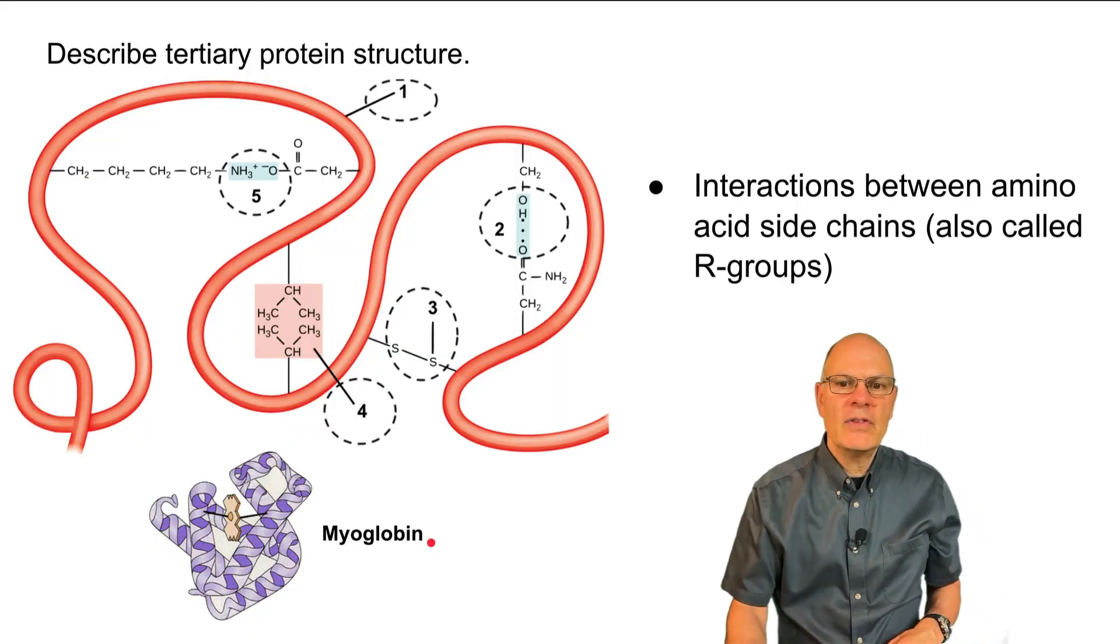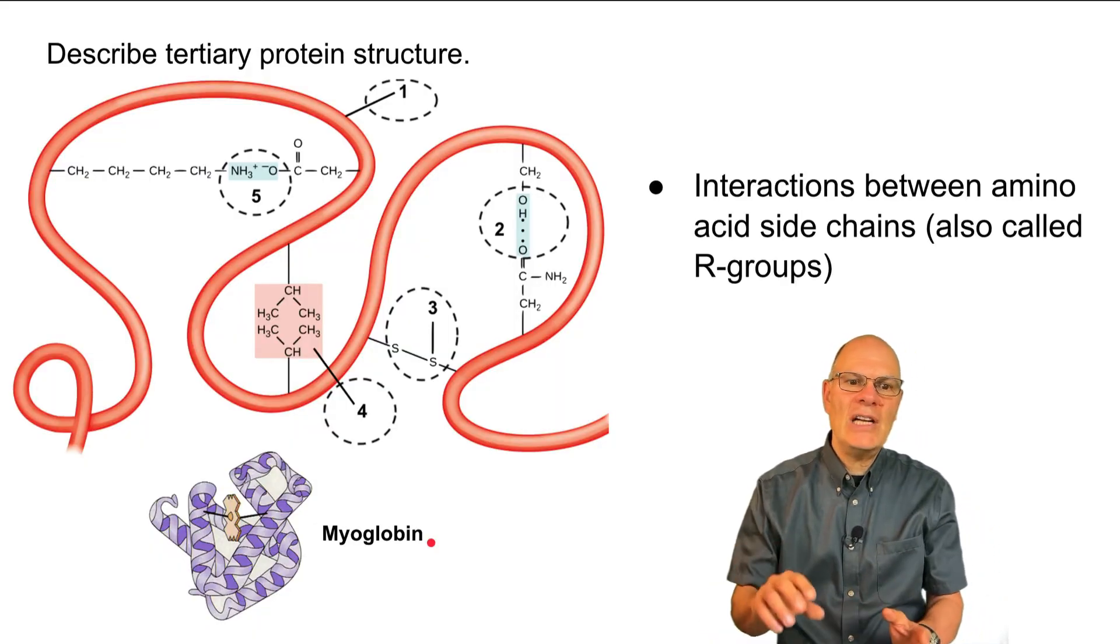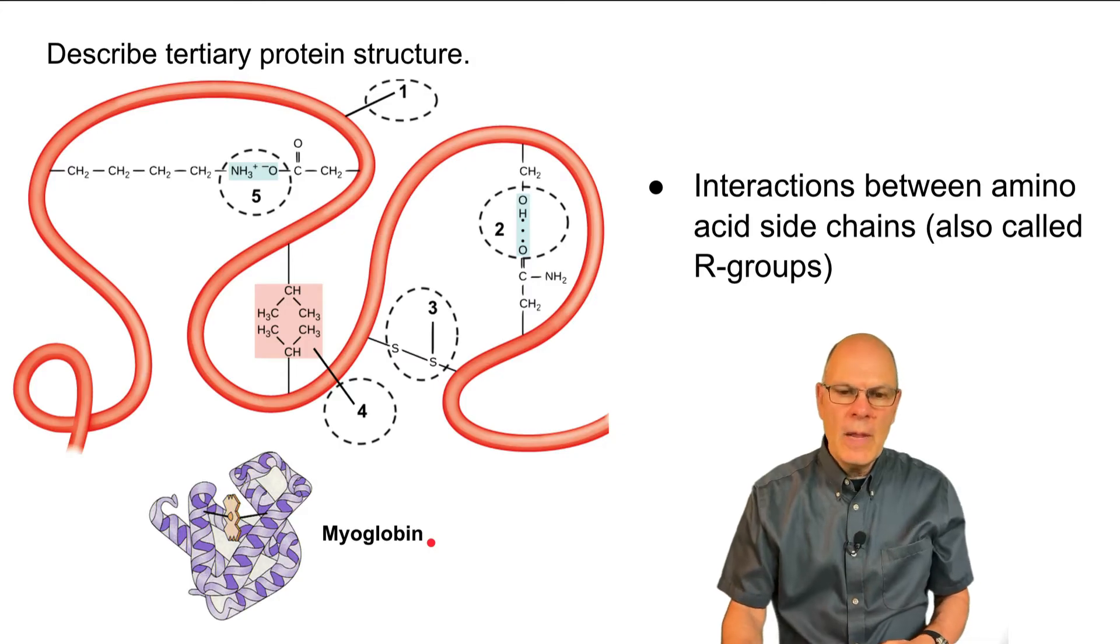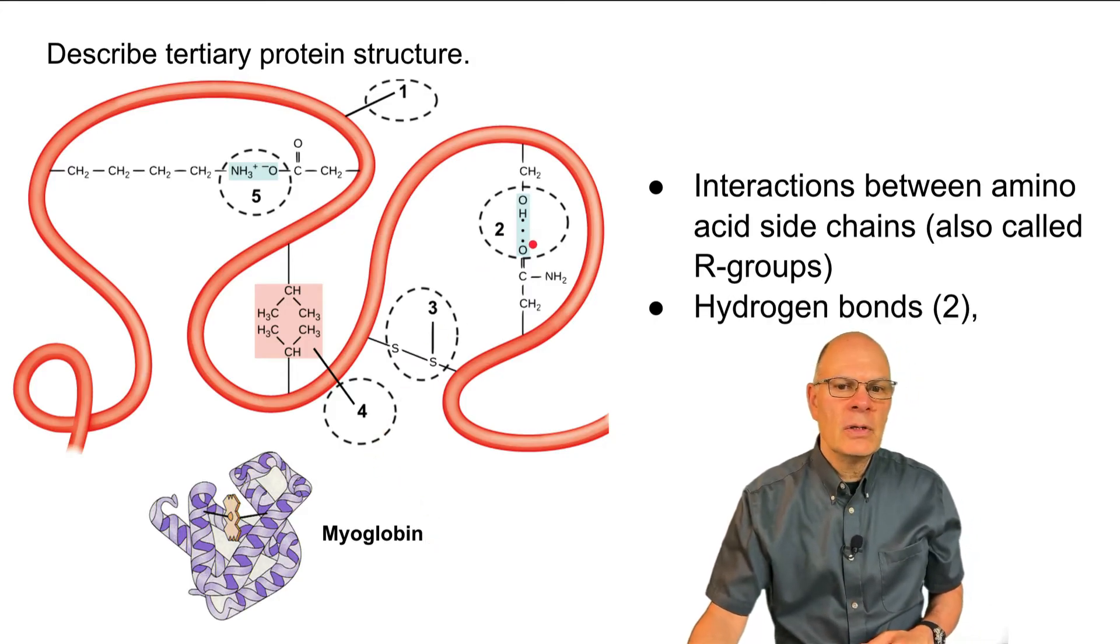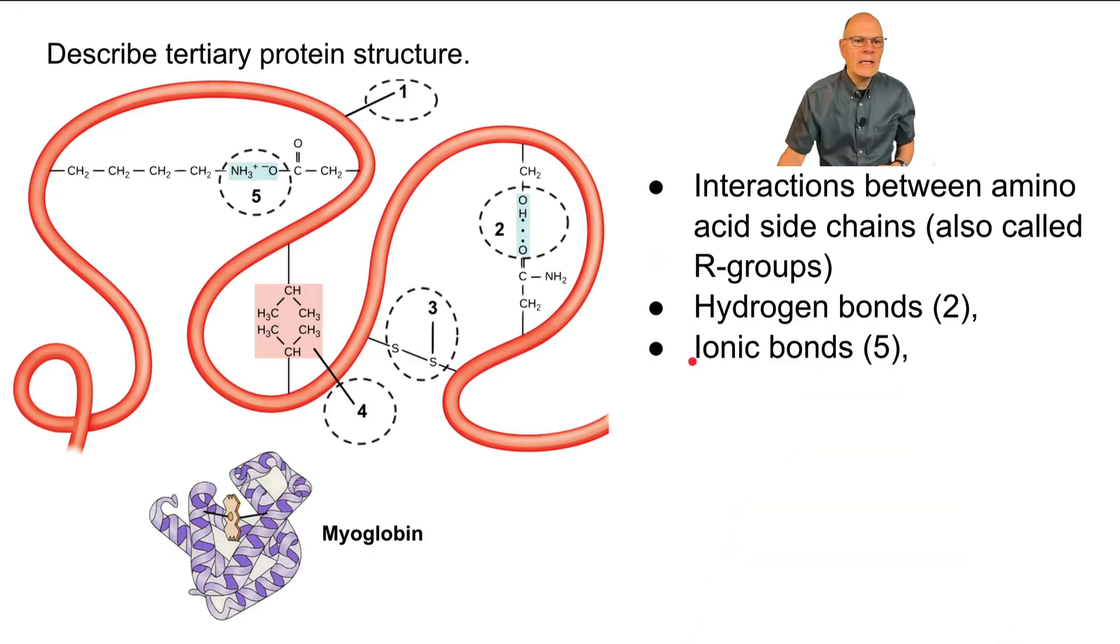Tertiary protein involves interactions between the side chains or the R groups. And there are a couple to know about. First of all, there are hydrogen bonds shown at number two. There are ionic bonds that are shown at number five over here.